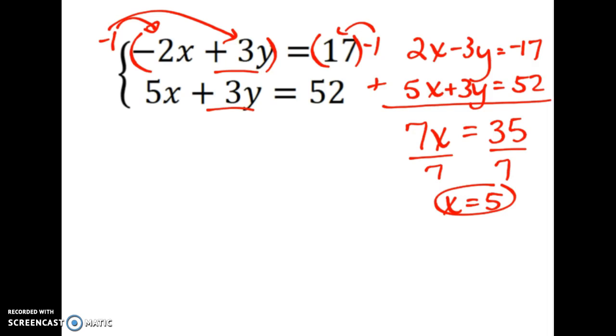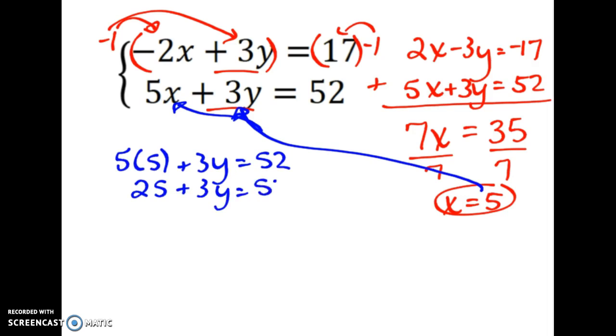But again, I'm not done. I need to plug this back in and solve for y. And I can choose to plug it into either equation. I'm going to pick the second one since it's all positives, and I just think I might not mess up as much. So I'm going to have 5 times 5 plus 3y equals 52. When I solve this, I get 25 plus 3y equals 52. Subtracting 25 from both sides leaves me with 3y equals 27. And when I divide by 3, I get y equals 9.